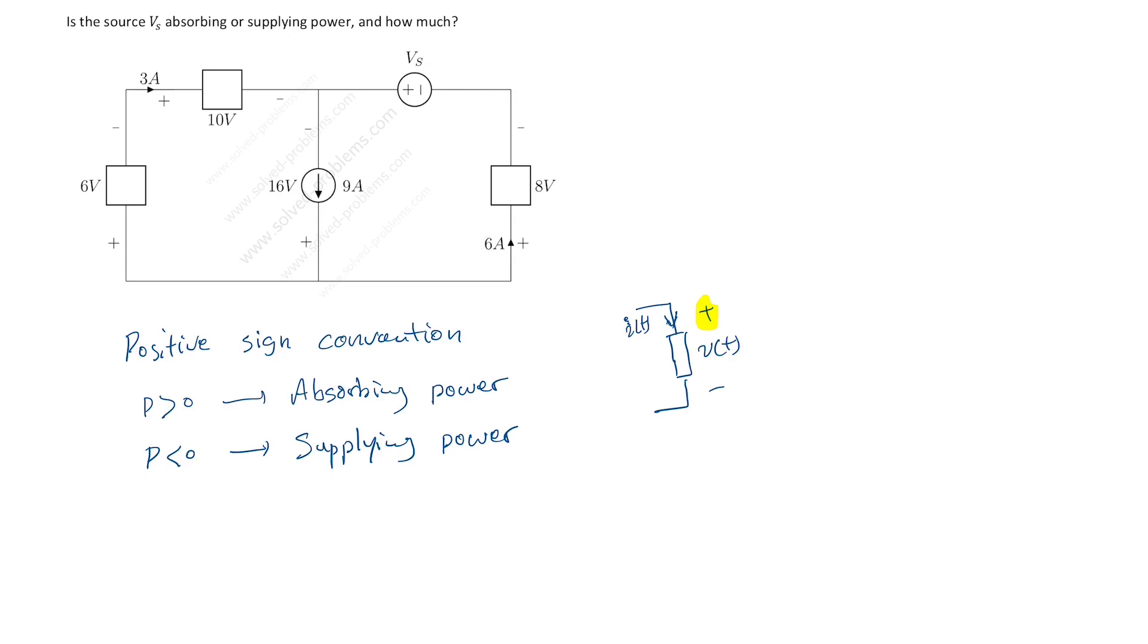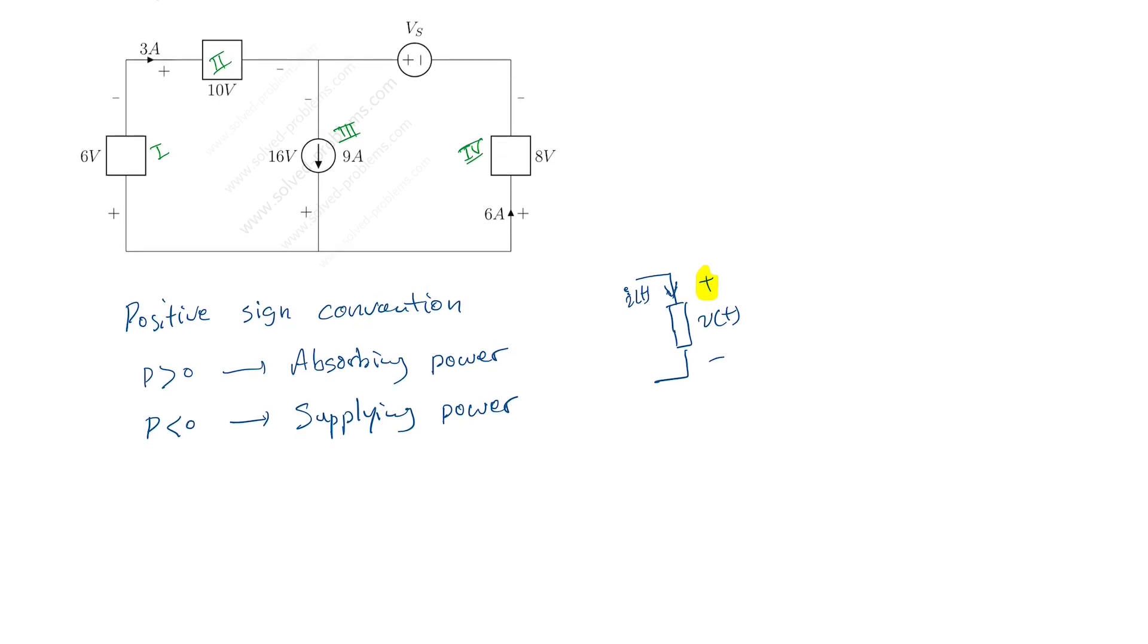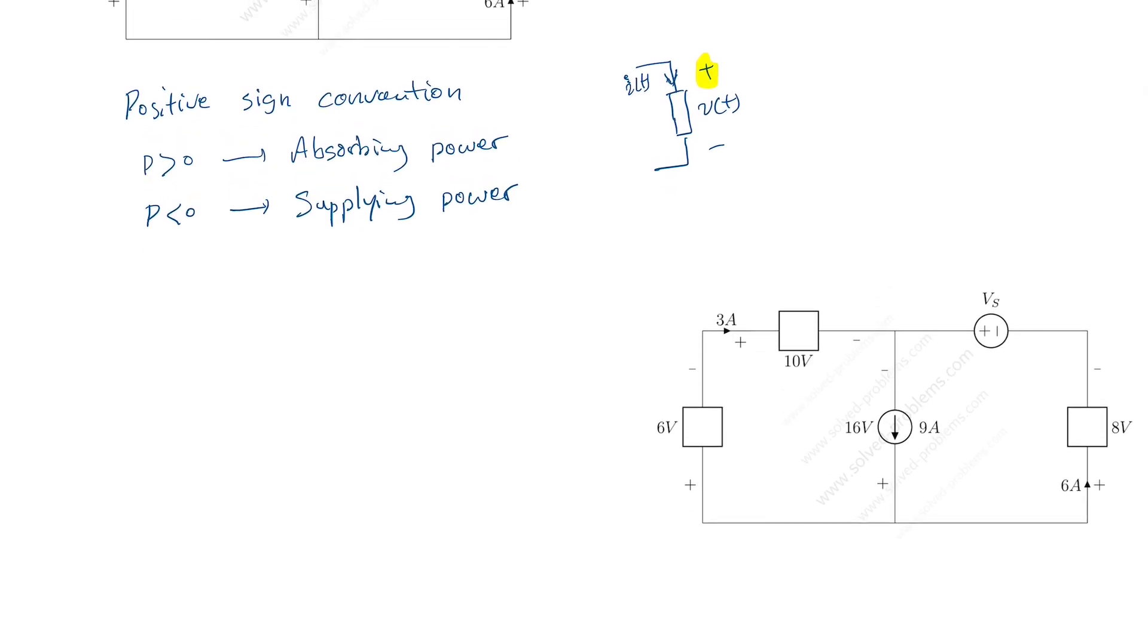So let's start element by element. Let's assign some labels to elements to make our solution much easier to understand. So I'm gonna call this element element one, this one element two, current source I'm gonna call it element three and this element four. And I'm not gonna assign any label for the voltage source because it has already labeled Vs. So what we're gonna do one by one, we're gonna determine the power of this element. So let me bring this circuit here.